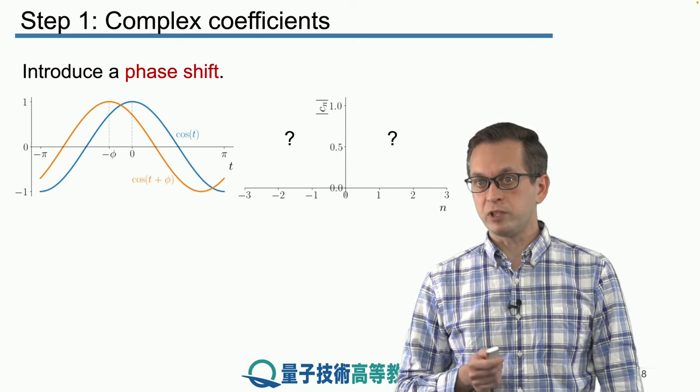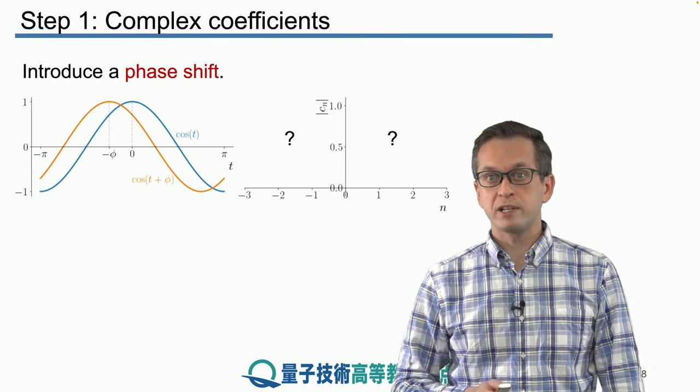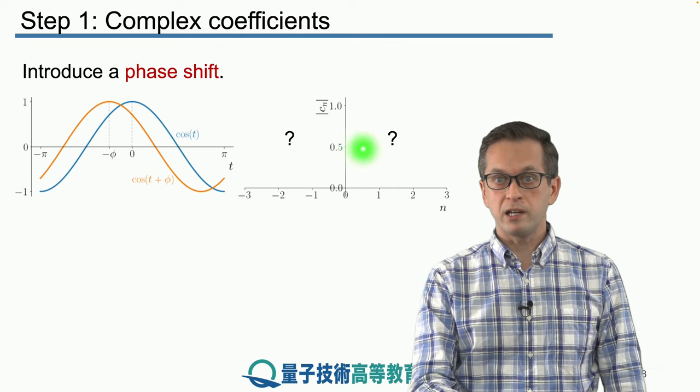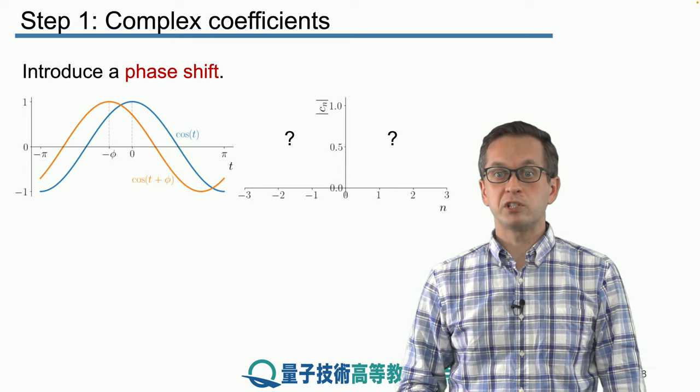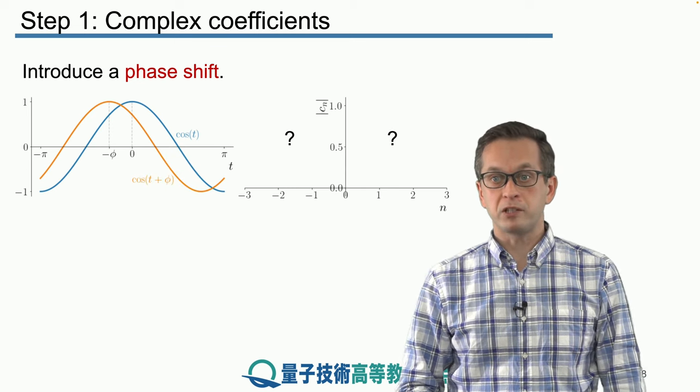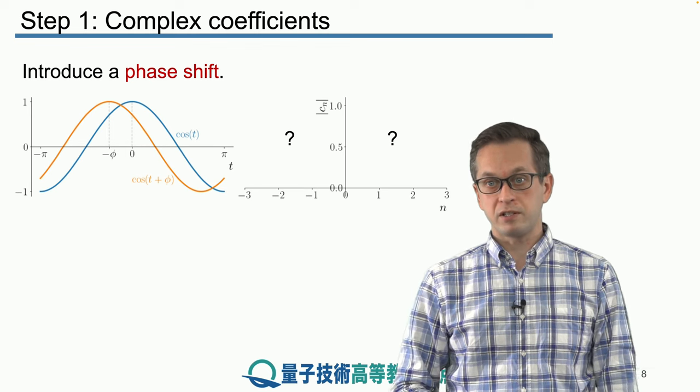Now imagine that we shift our function a little bit. Instead of having cosine of t, we have this orange line, which is cosine of t plus φ. And the question is now, how does it change our spectrum? How does it change the coefficients in our series expansion?